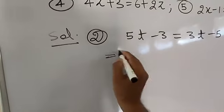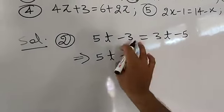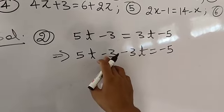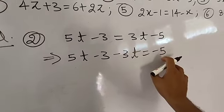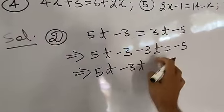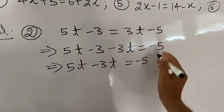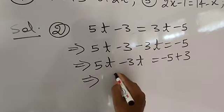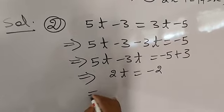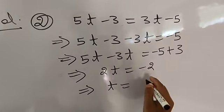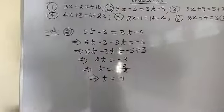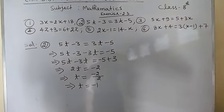Transferring plus 3t to the left side gives minus 3t, equal to minus 5. Now, minus 3 is the numerical value on the left side, so send it to the right side. It becomes 5t minus 3t equal to minus 5 plus 3. That gives 2t equal to minus 2. Therefore t equals minus 2 upon 2, which is t equal to minus 1. So the value of t is minus 1.